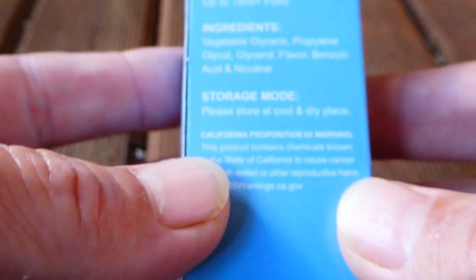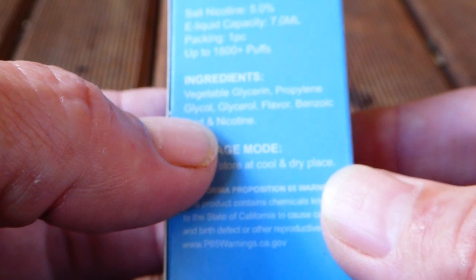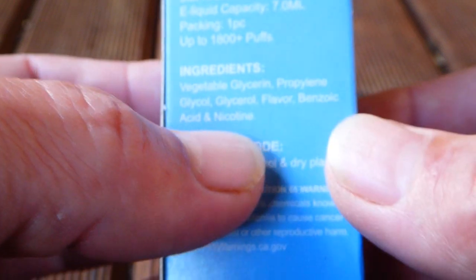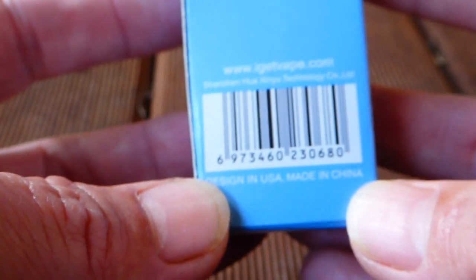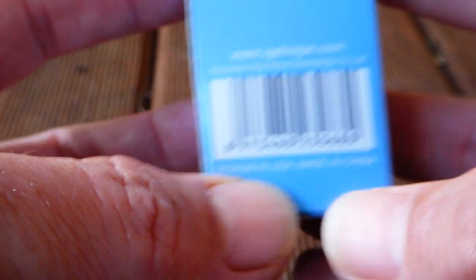It says on the back here that it contains vegetable glycerin, propylene glycol, glycerol flavor, benzoic acid - yeah, look that up - and nicotine in a salt form. Salt form nicotine is faster absorption. Designed in USA, made in China.